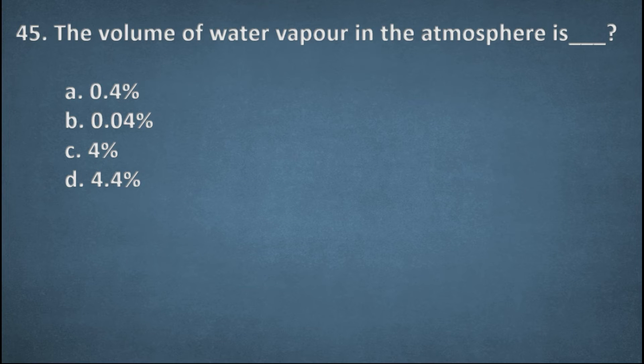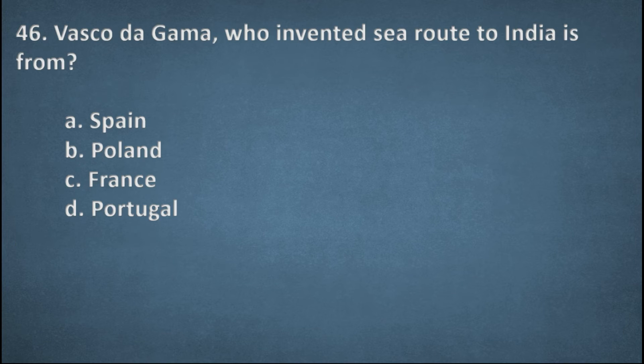Next one. The volume of water vapor in the atmosphere is. Options: 0.4 percentage, 0.04 percentage, 4 percentage, 4.4 percentage. The right option, 0.4 percentage, A. Next one. Vasco de Gama who invented sea route to India is from. Options: Spain, Poland, France, Portugal. The right option, D, Portugal.